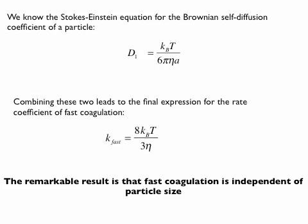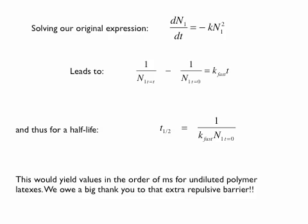It doesn't matter how big your particles are. If you're in the gravity-free regime and you can rely on Brownian diffusion, the rate of coagulation is the same. The question is: how fast is this then? You have to go back to year one kinetics to get an idea.